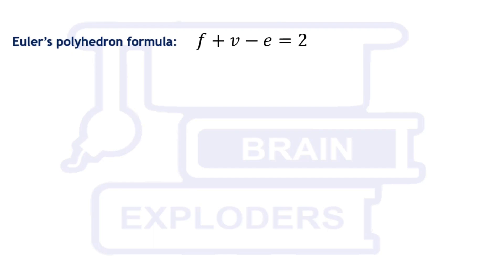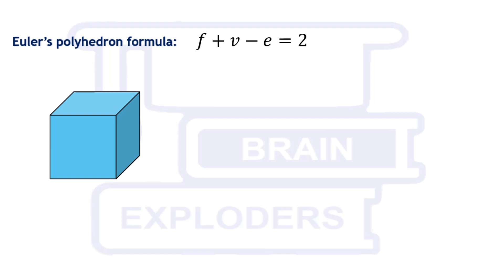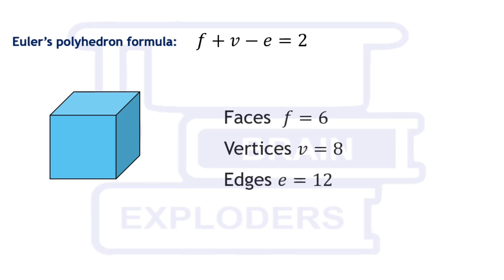F plus V minus E equals 2. Let's see what this equation represents with the help of an example. Let us take a cube. We know that a cube has 6 faces, 8 vertices and 12 edges. So if we add the number of faces with the number of vertices and subtract the number of edges from it, we get 2.